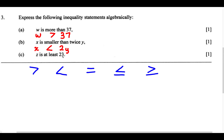For part C: Z is at least 23. We have the variable Z. Which symbol best applies? Z is greater than 23 — yes and no, it's not the most appropriate. Z is less than 23 — no. Z equals 23 — that can kind of work but isn't the best. Z is less than or equal to 23 — not really. Finally, Z is greater than or equal to 23, and that seems to be the best fit. So we write Z is greater than or equal to 23.